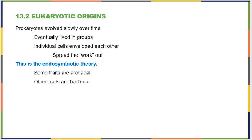Section 13.2 picks up with eukaryotic organisms. We know that prokaryotes evolved slowly over time, and from the evidence we have, we also know that eventually they lived in groups, meaning clumps or clusters of cells.